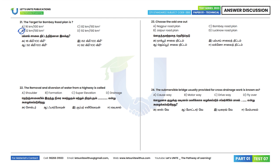21st question: The target for the Bombay Road Plan is 32 km per 100 km². Option B is the correct answer. 22nd question: The removal and diversion of water from a highway is called drainage. Option A is the correct answer.